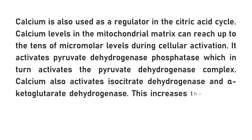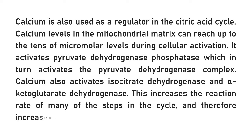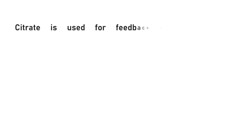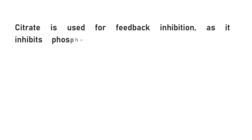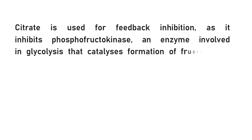Citrate is used for feedback inhibition, as it inhibits phosphofructokinase, an enzyme involved in glycolysis that catalyzes the formation of fructose-1,6-bisphosphate, a precursor of pyruvate. This prevents a constant high rate of flux when there is an accumulation of citrate and a decrease in substrate for the enzyme.